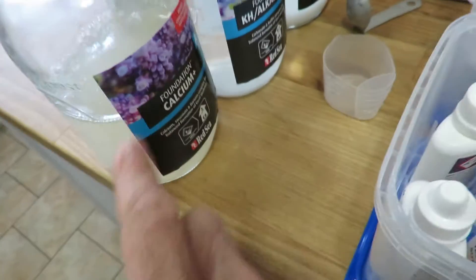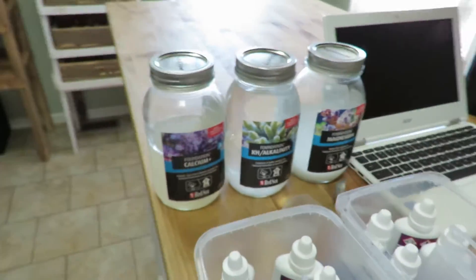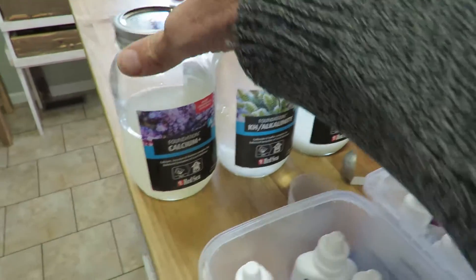And then I just took the label off, put them on these jars and this has calcium, alkalinity and magnesium. Even though it is a soft coral tank, I'm also dosing magnesium and alkalinity and calcium.